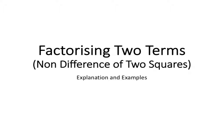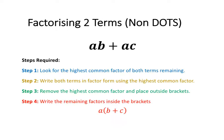In this video, we're going to have a look at how to factorise two terms that does not involve factorising a difference of two squares. To factorise an expression involving two terms, the first step is to look for the highest common factor in both of the terms. Step two is to write both terms in factor form using that highest common factor.